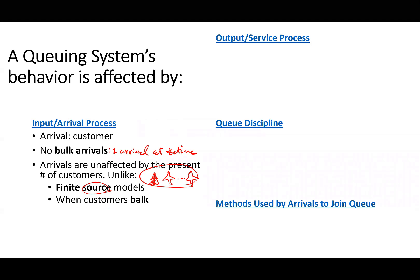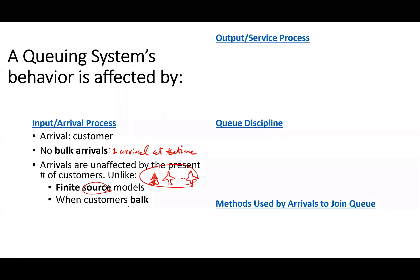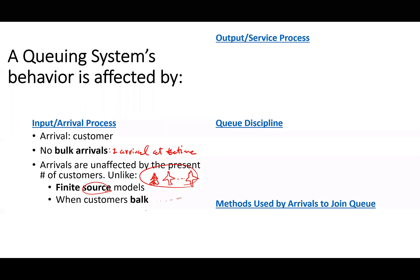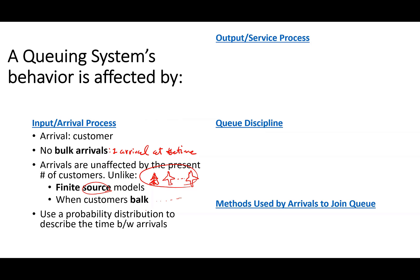Another case is when customers balk. When customers balk, that means a person sees that there is a huge line and decides not to join it, which is the case in a lot of applications. You try to go to a store or restaurant, you see a lot of cars waiting, so you balk — you drive away and decide not to join the line. We will later assign a probability distribution to describe the time between arrivals.